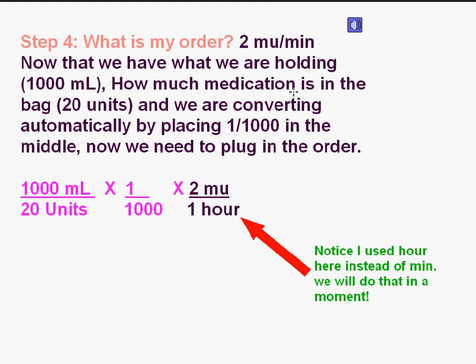Step 4: What is my order? It's 2 million units a minute. Now that we have what we are holding — 1,000 mils — how much medication is in the bag — 20 units — and we're converting automatically by placing 1 over 1,000 in the middle, now we need to plug in the order. Notice I used hour here instead of minutes; we will do that in a moment. You don't ever have to move decimals when calculating fluid using dimensional math, and this is a dimensional math problem.